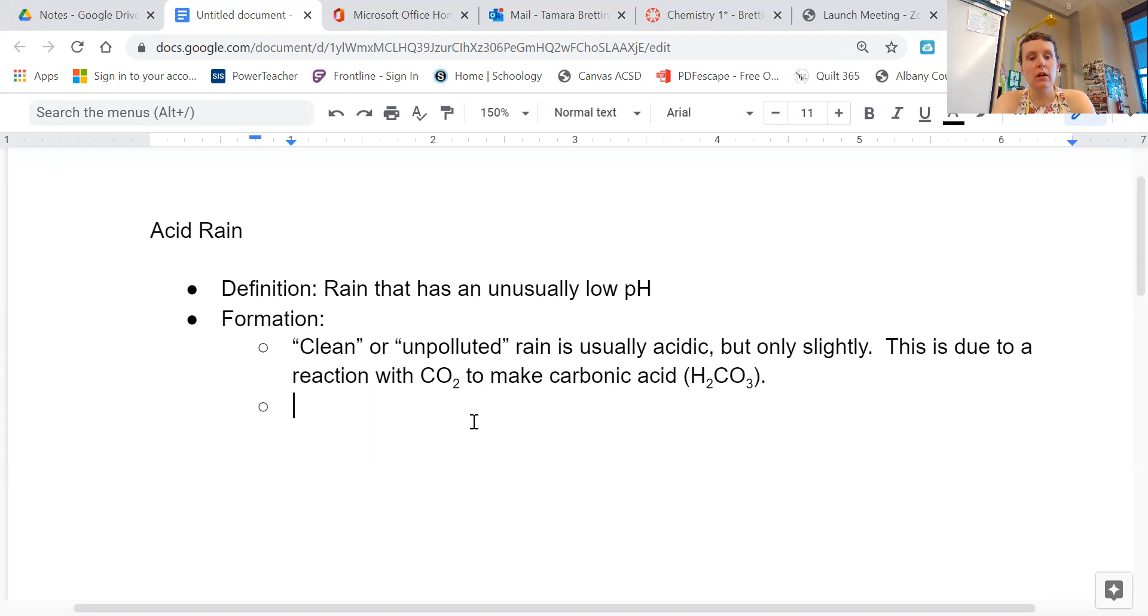So acid rain occurs when SO2 and NOx—remember we learned this in air chemistry, NOx is nitrogen oxides in general as a category. Sometimes that's NO2, sometimes that's NO, sometimes it's N2O4, but it's a nitrogen oxide compound. So it occurs when SO2 and NOx react with the water in the atmosphere to make stronger acids.